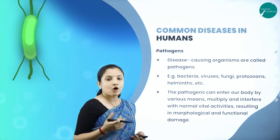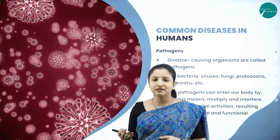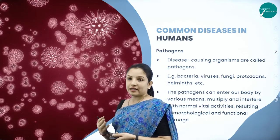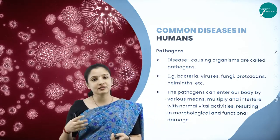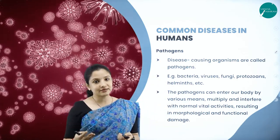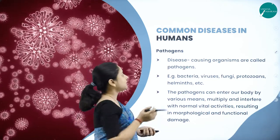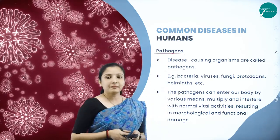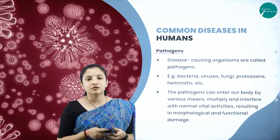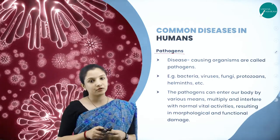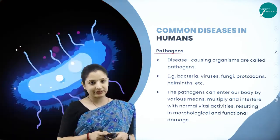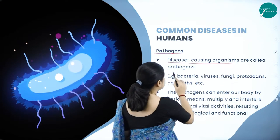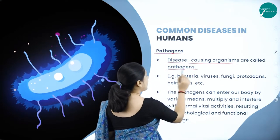Let us study some common diseases in human beings. There has to be some vector — actually called a pathogen — which causes these diseases. Pathogens are organisms which are capable of causing diseases. The different types of pathogens include bacteria, viruses, fungi, protozoans, and helminths.